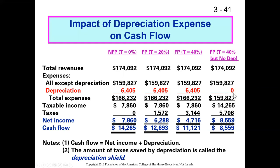Now let's assume the fourth column has no depreciation — not a realistic assumption, since the only way you'd have no depreciation is if you owned nothing at all. This is really just a straw man to demonstrate the principle. With no depreciation, total expenses are lower, which creates a higher taxable income.